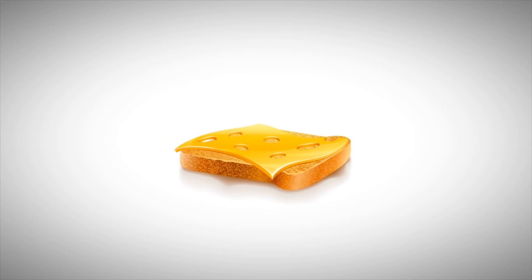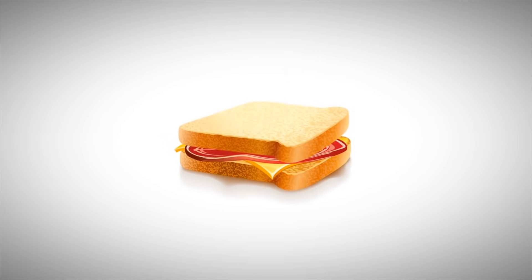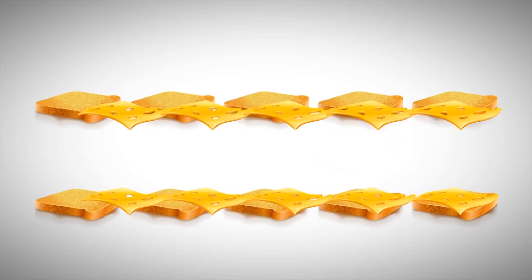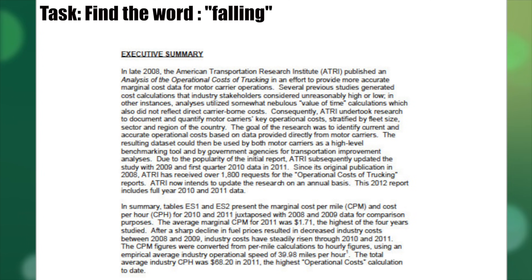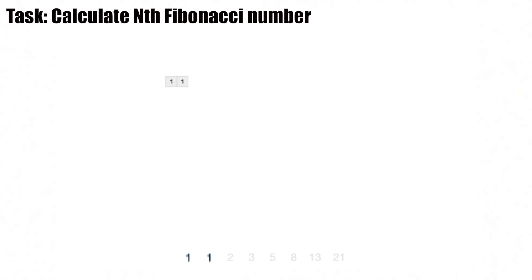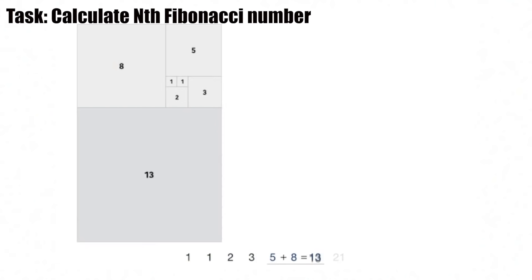Traditionally, software has been written for serial computation where instructions are executed one after the other, but there are some algorithms that can be framed to utilize parallel computation. Searching for a specific word in a document, for example, can be done serially by iterating through every word from start to finish, but it can also be done in parallel by having ten different workers search a different section of the document for the target word at the same time. But some algorithms, like calculating the nth Fibonacci number, can't be made parallel since we can only find it after the preceding two Fibonacci numbers have been calculated in order.